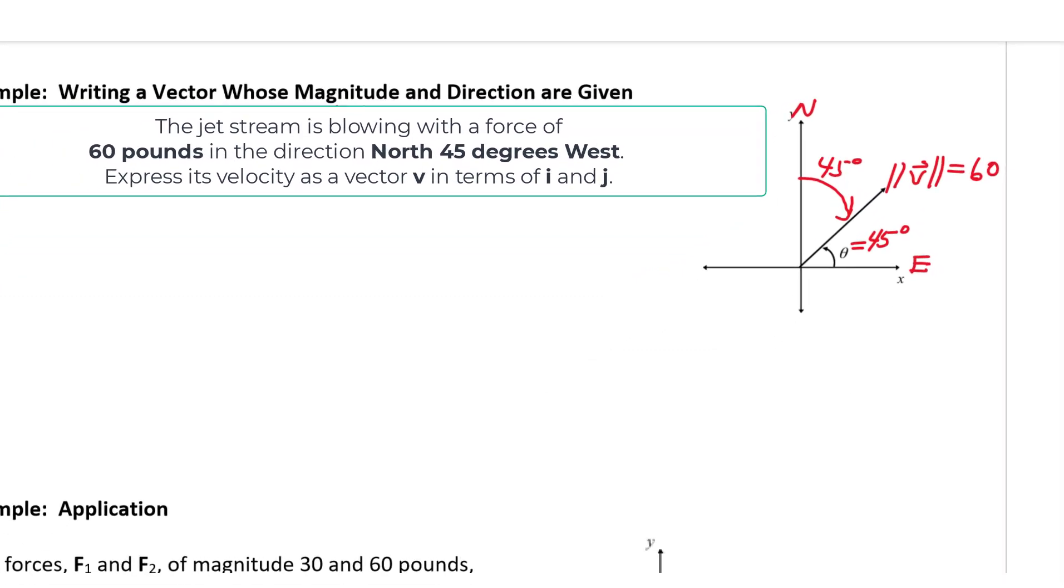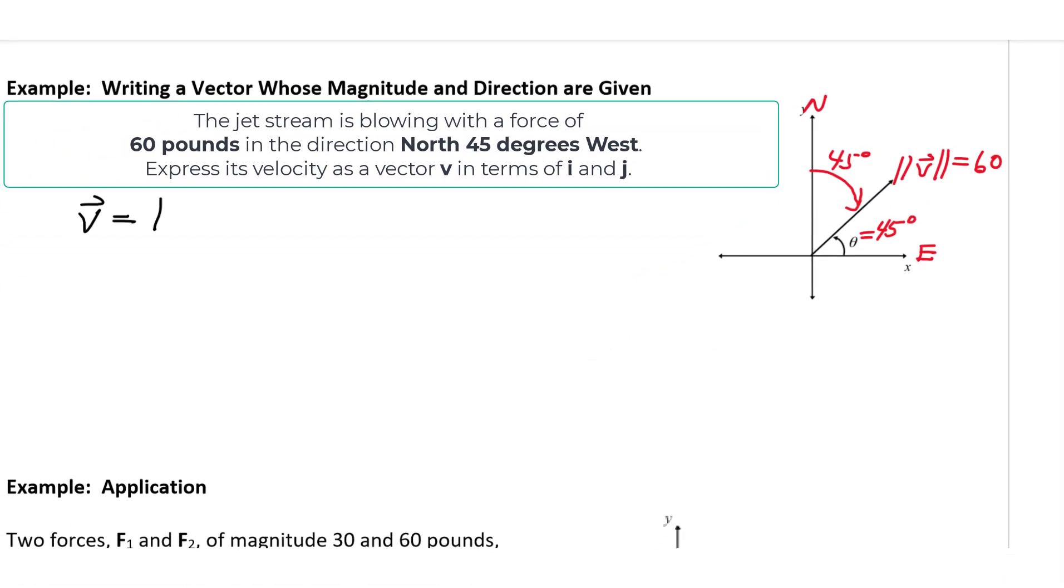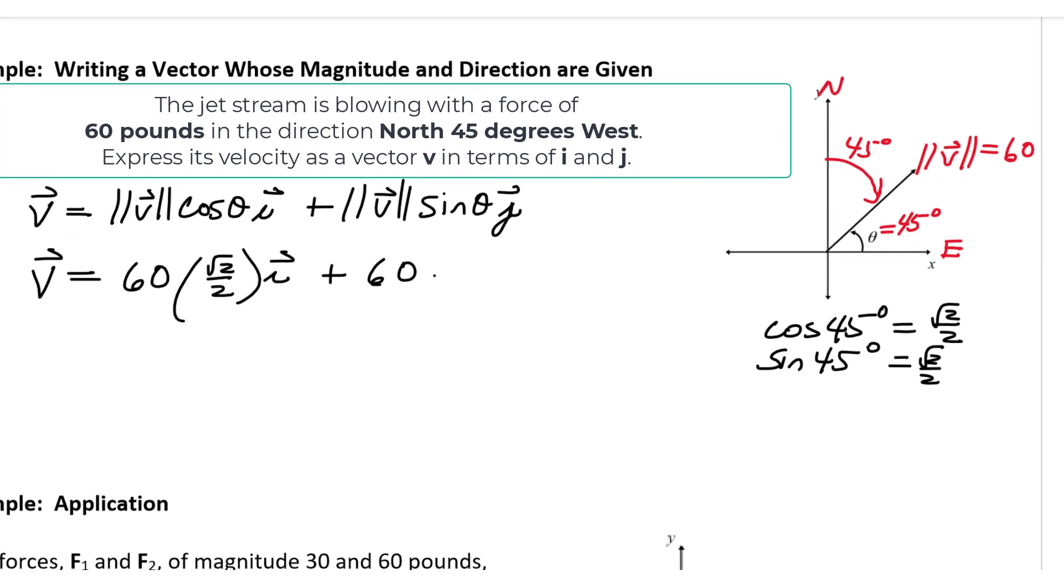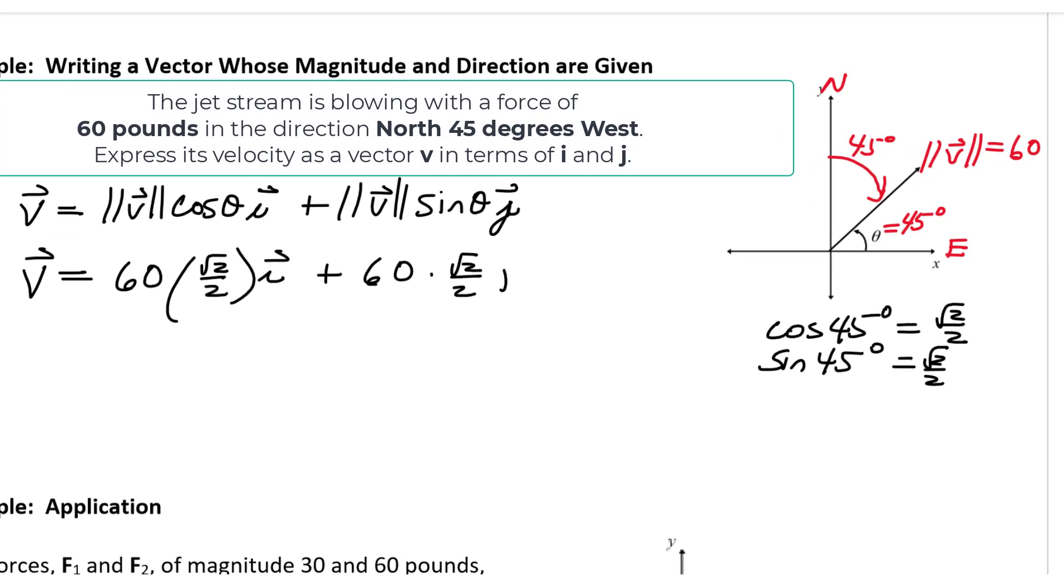So we have the angle formed with the positive x-axis and the magnitude of this vector is 60. So we can use v equals the magnitude of v times the cosine of theta i plus the magnitude of v times the sine of theta j. The cosine of 45 degrees is root 2 over 2, and the sine of 45 degrees is also root 2 over 2. So we're going to have v equals 60 times root 2 over 2 i plus 60 times root 2 over 2 j.